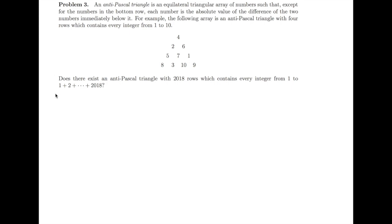Let's start with a simple lemma. Consider an anti-Pascal triangle with n rows and denote x_i to be the minimum of the i-th row. For example, x_1 is the minimum of the first row, x_2 is the minimum of the second row, and x_n is the minimum of the n-th row.